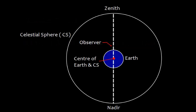Let's have a look at this diagram. This is Earth and this is the center of Earth. This is the celestial sphere. As per the definition, the center of the celestial sphere and the center of Earth is the same, and this is the observer. The point right above the observer on the celestial sphere is called zenith. A line joining the center of Earth to the observer meets at zenith. The point 180 degrees away — diametrically opposite to zenith — is called nadir.